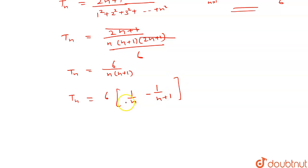Here n is from 1 to infinity. So summation of Tn from n equals 1 to infinity will be equals to 6 into...